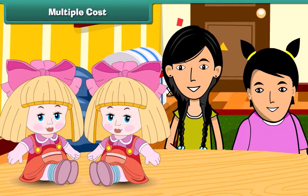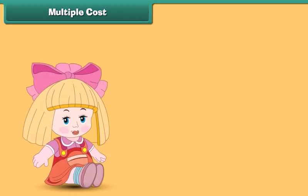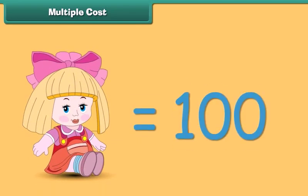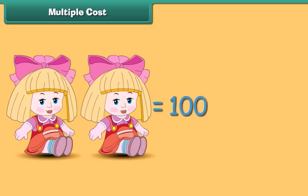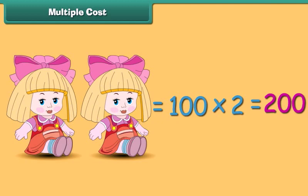Let us hear what these girls are talking. My mother bought these two dolls — one for me and one for my younger sister. The unit cost of the doll is 100 rupees. Unit cost is the cost of a single unit, so the cost of one doll is rupees 100. The multiple cost of two dolls is equal to rupees 100 multiplied by 2, which is rupees 200. A multiple cost is the cost of more than one item, calculated as unit cost multiplied by number of items.